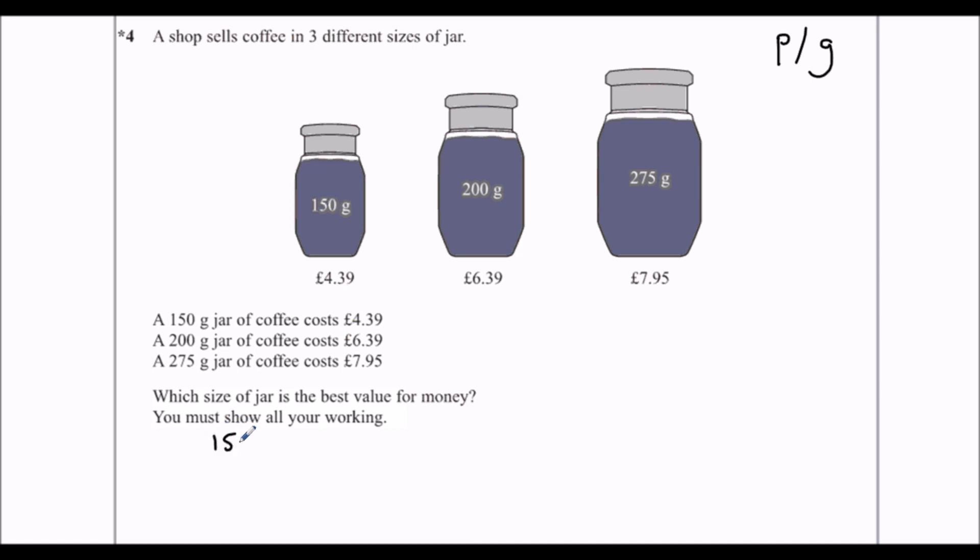So we'll start with 150. We pay 439 pence for 150 grams. Now we're going to need to put that in the calculator. So in the calculator type in 439 divided by 150,